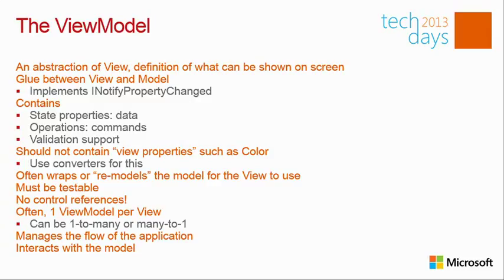The ViewModel is the glue between your view and your model. It sits between those two layers and contains state as properties and operations in the form of commands. In your ViewModel you should never have code that directly manipulates view elements — if you ever have view elements directly in your ViewModel you're doing something wrong. The ViewModel makes sure the view can bind on it and can be tested and maintained in isolation. It becomes testable and much more maintainable.